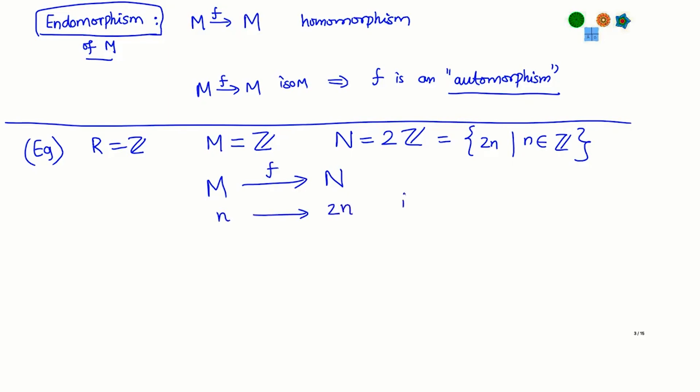Consider the map N going to 2N. This is an isomorphism of Z-modules because it is clearly a bijection — it is one-to-one, and it is onto since all even numbers occur. It is a homomorphism of Z-modules because a homomorphism of Z-modules is nothing but a homomorphism of abelian groups, and this is of course a homomorphism of the underlying abelian groups Z and 2Z. In fact, this is not the only isomorphism; you can also construct N going to −2N. When two modules are isomorphic, there are often many different isomorphisms between them.